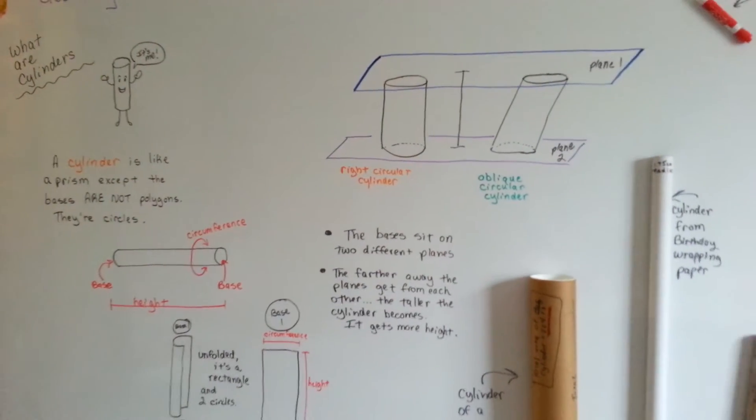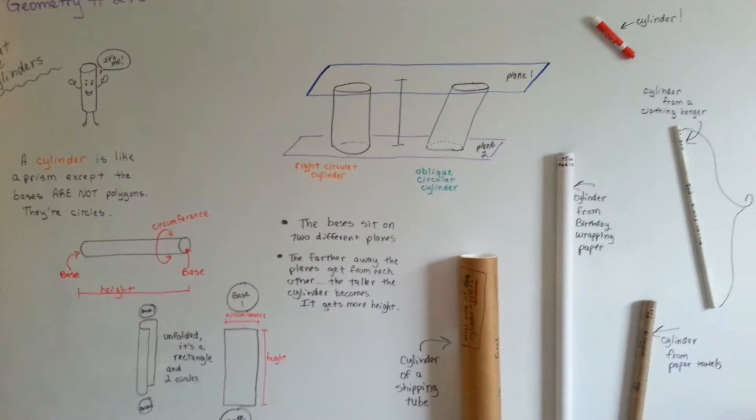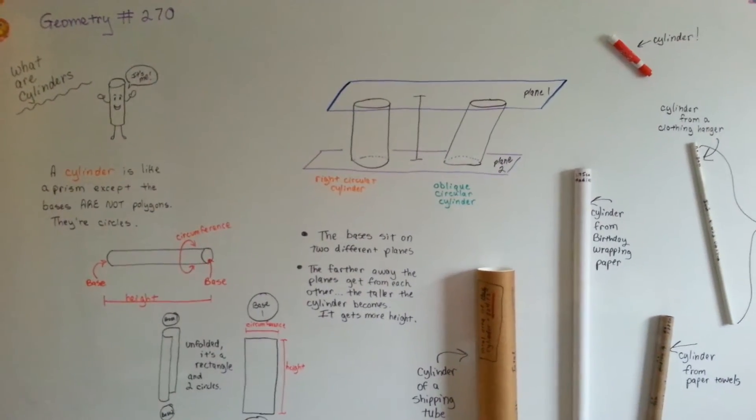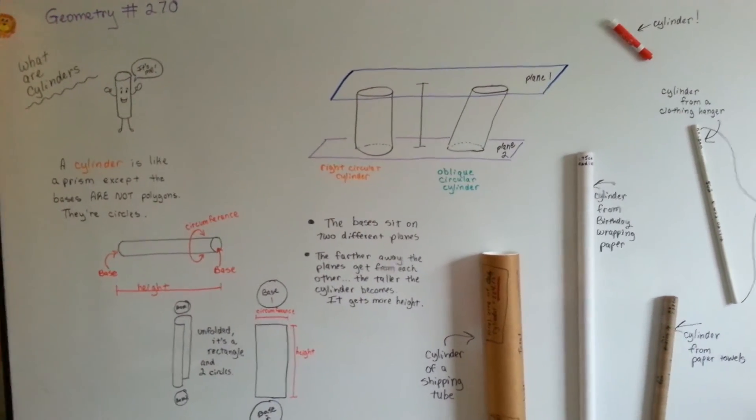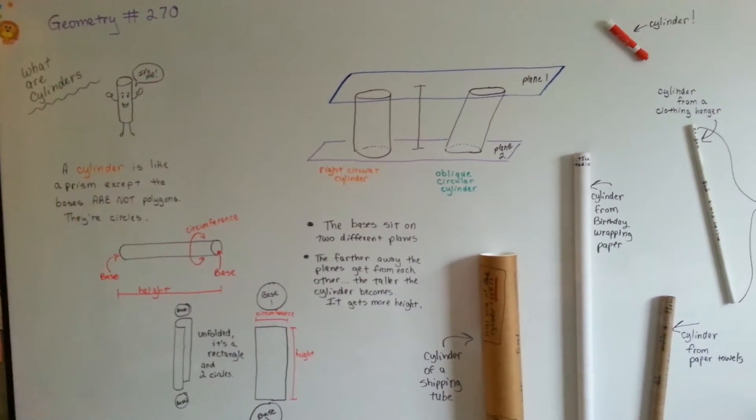So that is what a cylinder is, and we're gonna be talking about finding the surface area for a cylinder, and we're gonna be talking about getting the volume of one to find out how much this guy can hold.